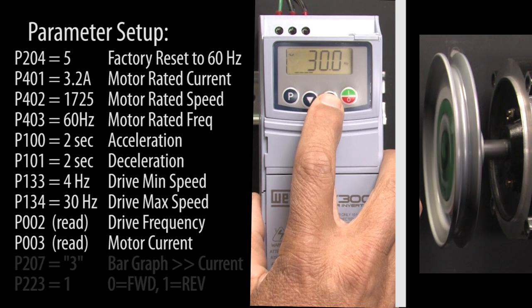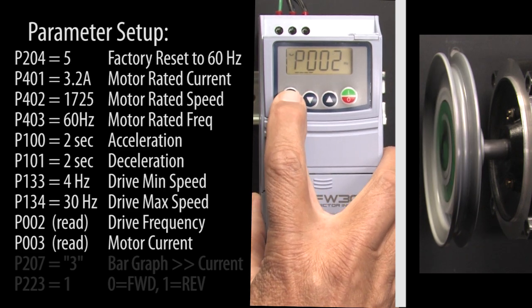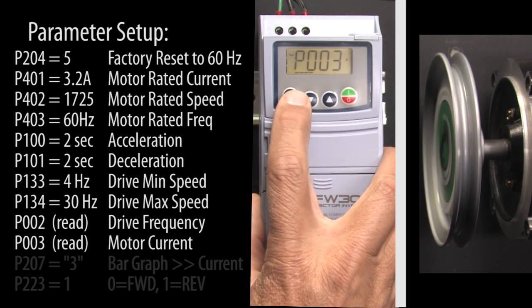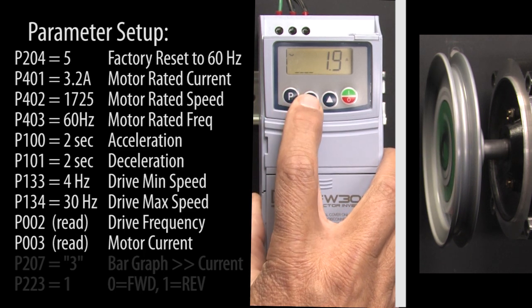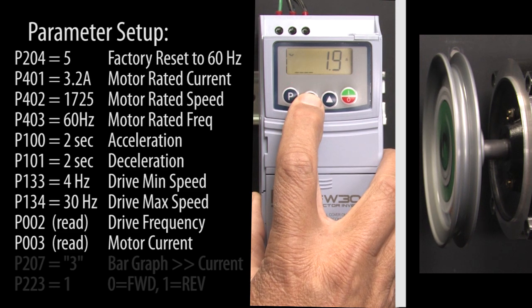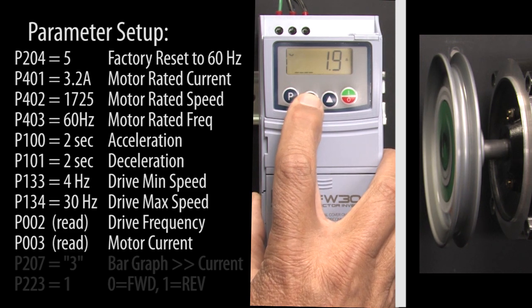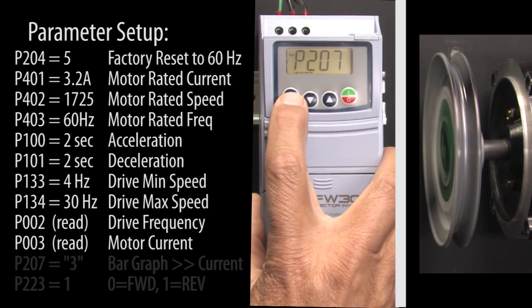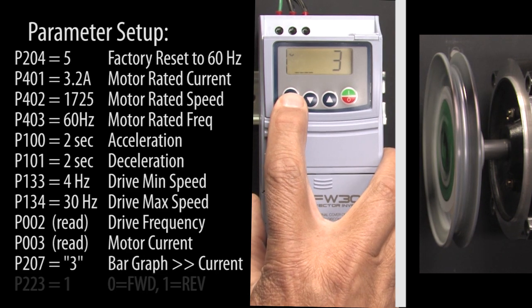To view the motor's current, press P to exit the frequency parameter. Go to parameter 3 which is the motor's current and press P to see the value. This bar graph down here is also showing the motor current because the bar graph parameter, which is parameter 207, says display parameter 3, the motor's current.